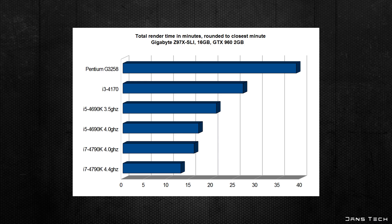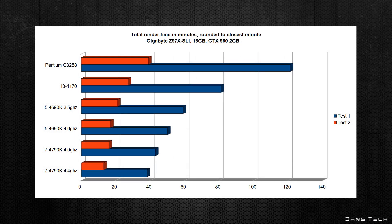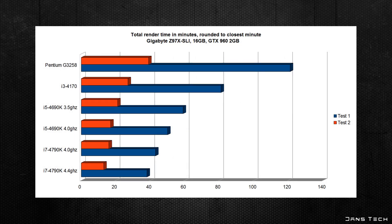For the second test, the i7 4790K rendered the video in just 16 minutes, the i5 4690K taking 21 minutes, the i3 4170 taking 27 minutes, and the Pentium G3258 taking 39 minutes. Overclocking the i7 improves render times by 3 minutes, and overclocking the i5 improves render times by 4 minutes.